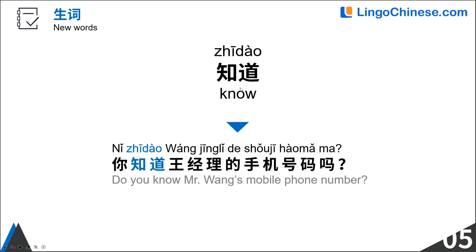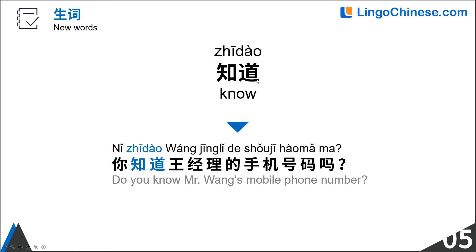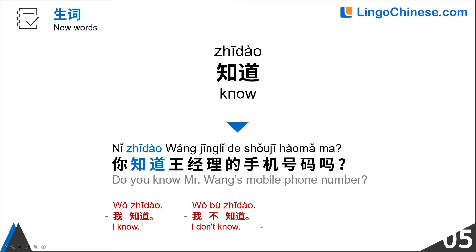知道 means to know. 你知道王经理的手机号码吗? 王经理 means Manager Wang. If you know, you can answer 我知道. If you don't know, you can answer 我不知道。